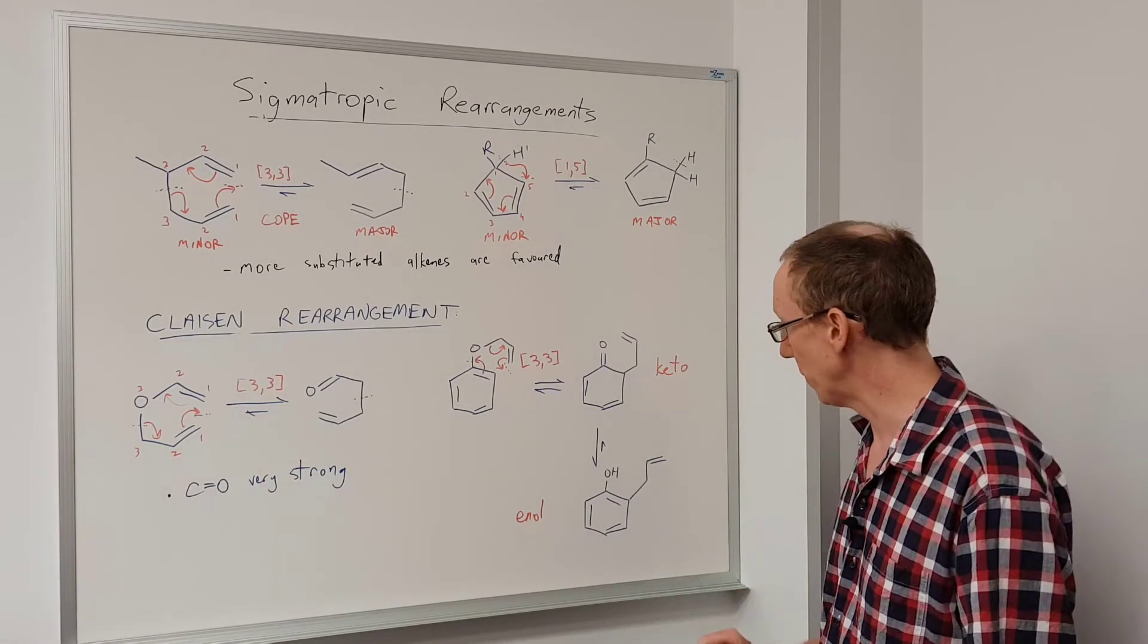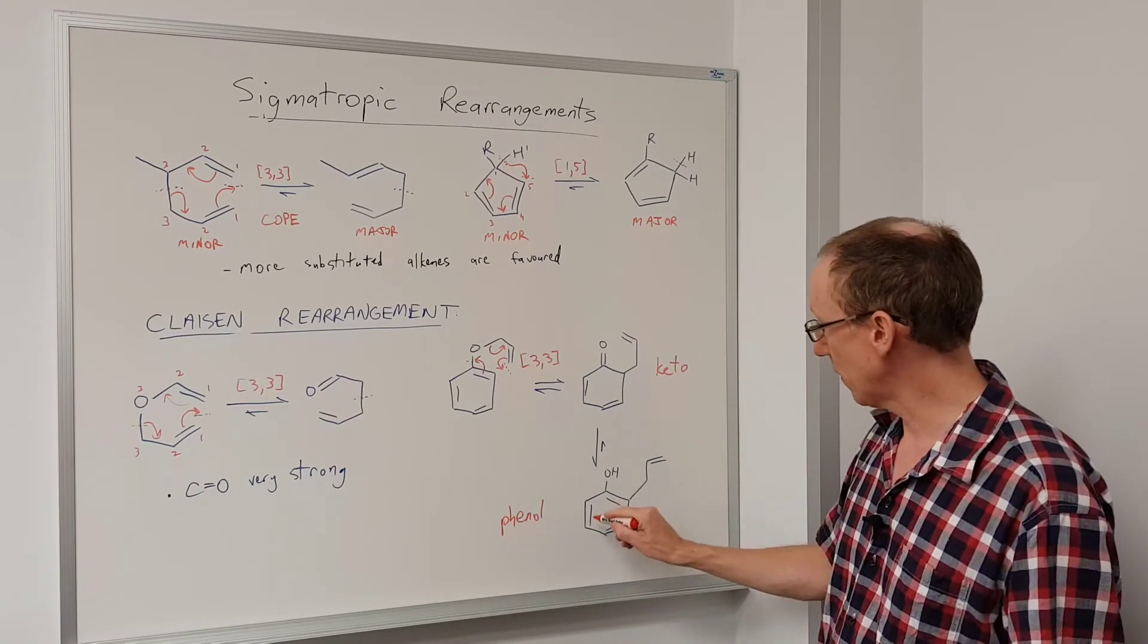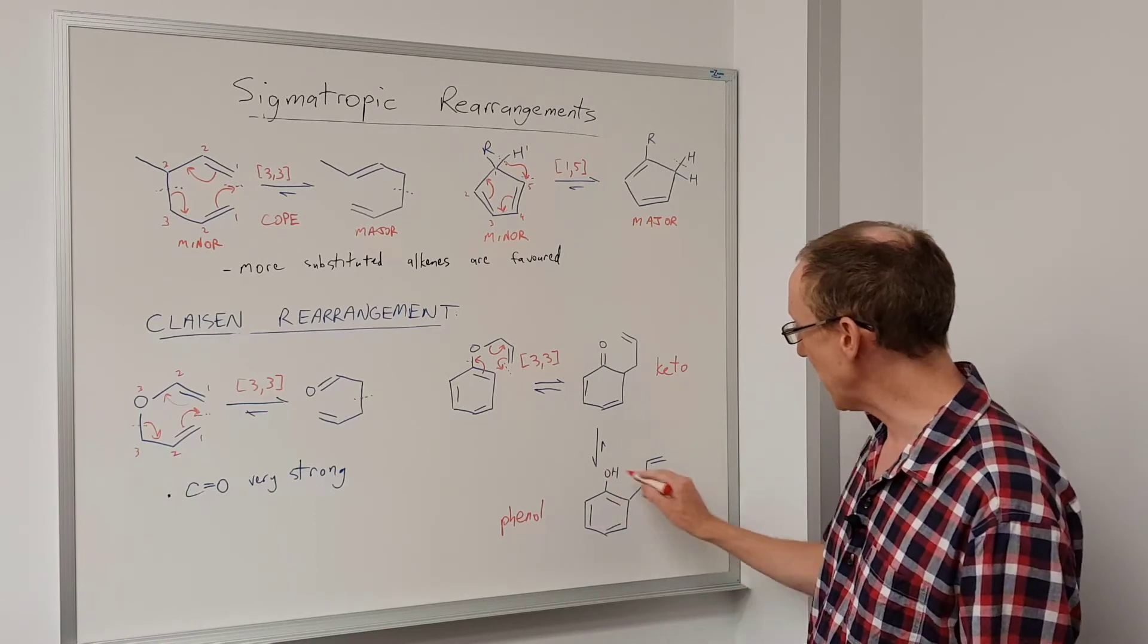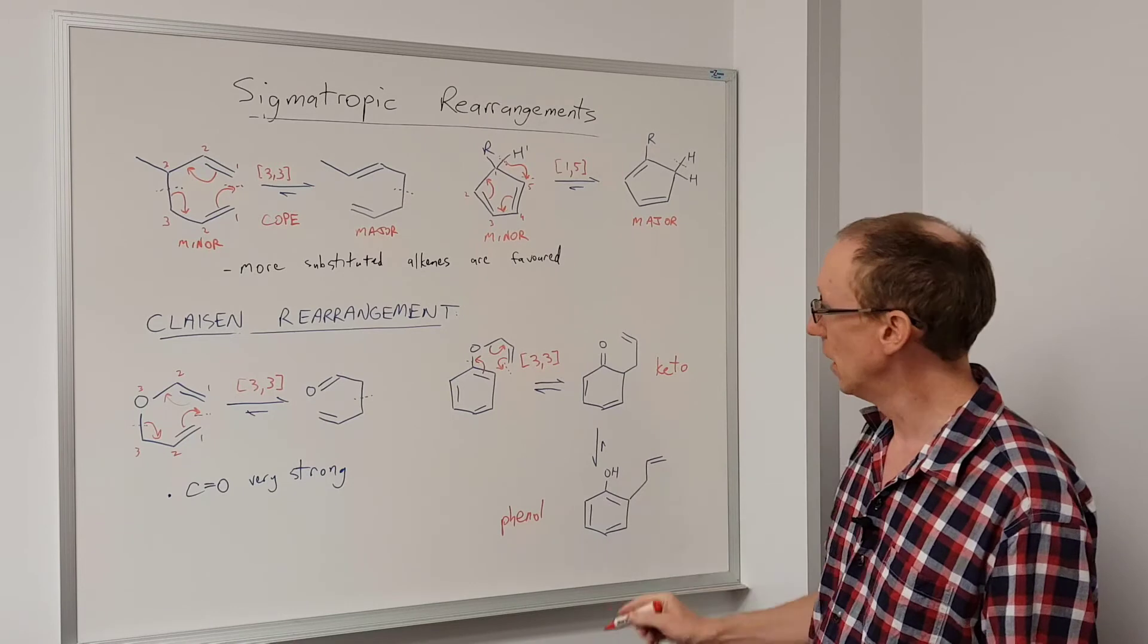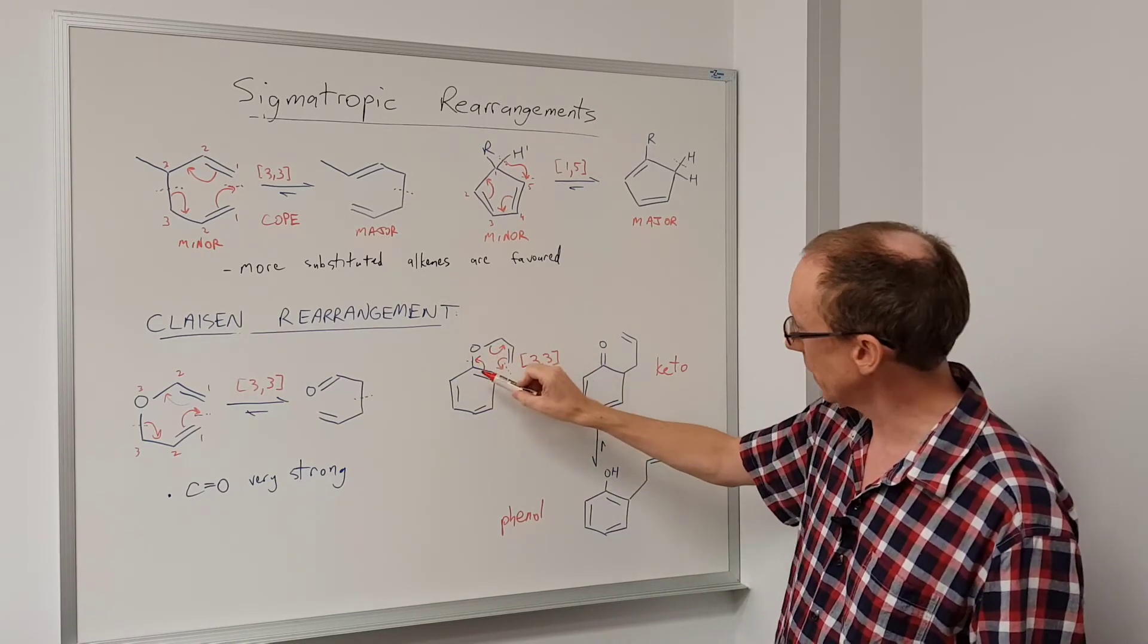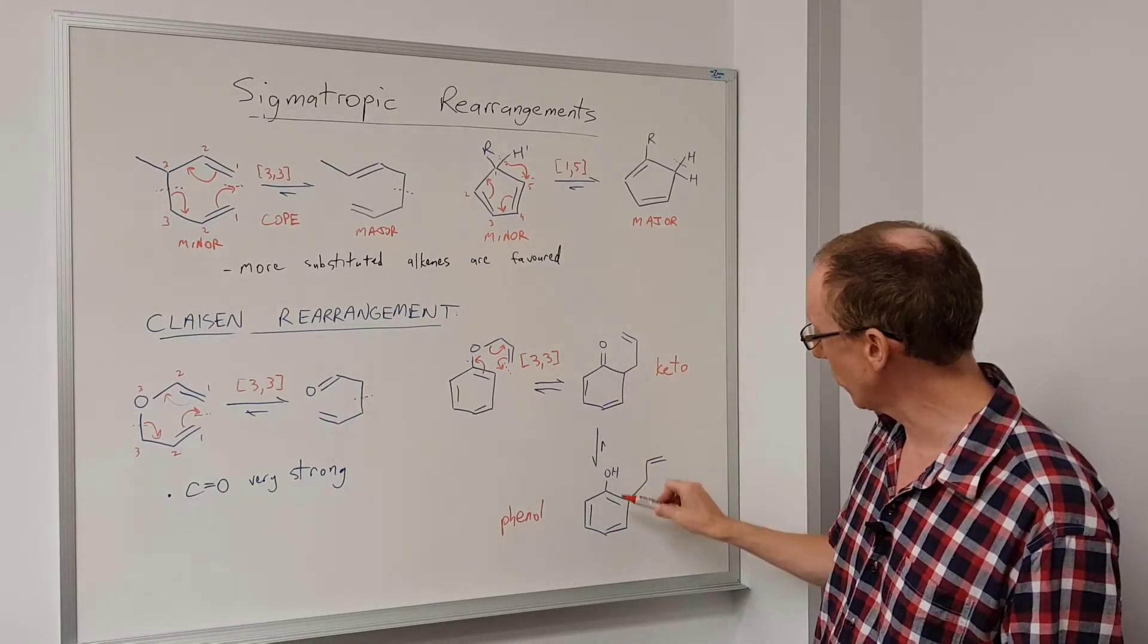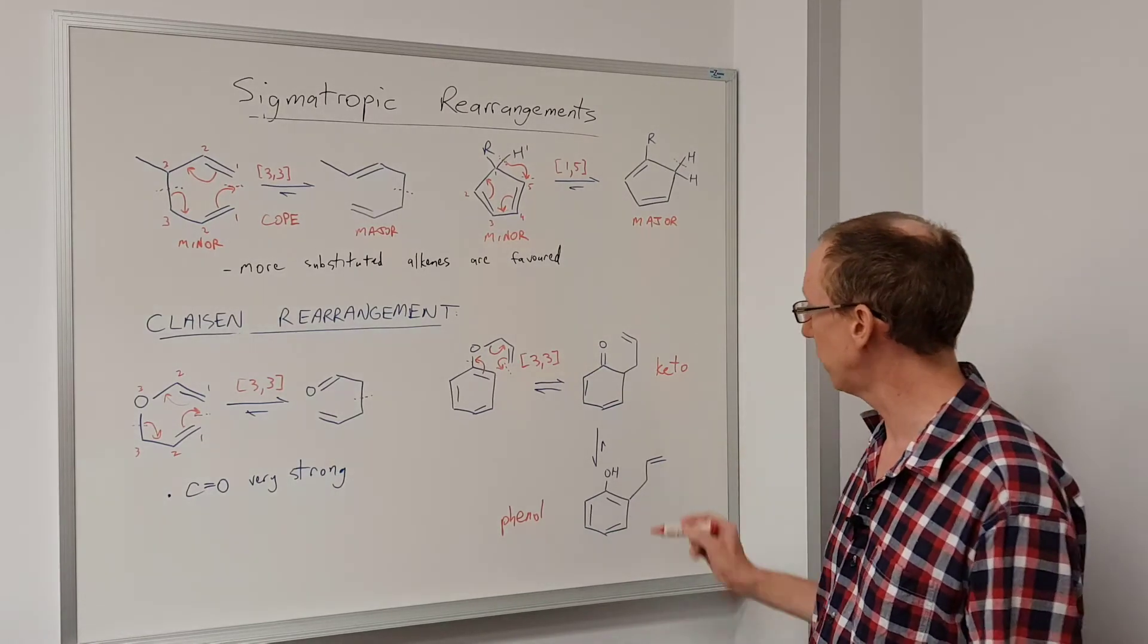However, it's a very special enol form. It's a phenol. And phenols benefit from aromaticity, and so this is going to be the major product by far at equilibrium between these two. So overall the Claisen rearrangement of a phenyl allyl ether goes to give this initially, but you don't see that because it tautomerizes to give the ortho-allyl phenol.